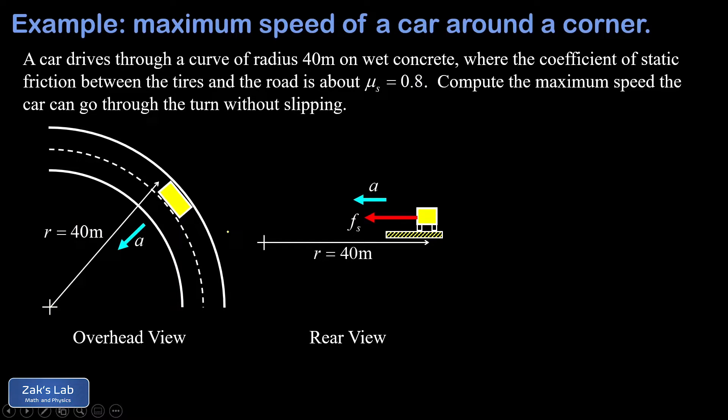Another way to argue the direction of the static friction force here is just to imagine what happens if we push this thing too far, so we go fast enough where slipping begins to occur. If this car goes fast enough to slip, it's going to fly off the outside of this curve, and what that looks like from the rear view is the car going off to the right. Well, the static friction force must point in the direction that opposes that kind of slipping, so that's just a second argument that it has to point to the left here.